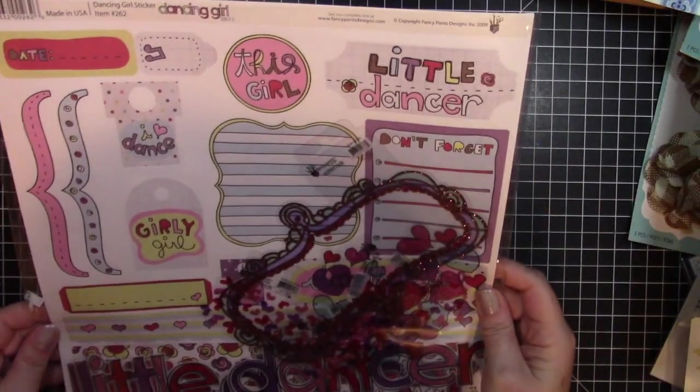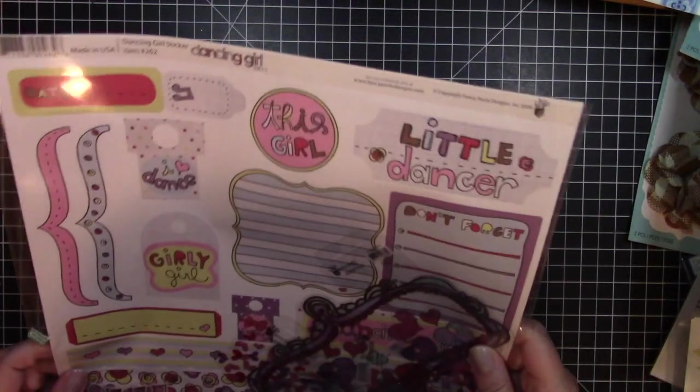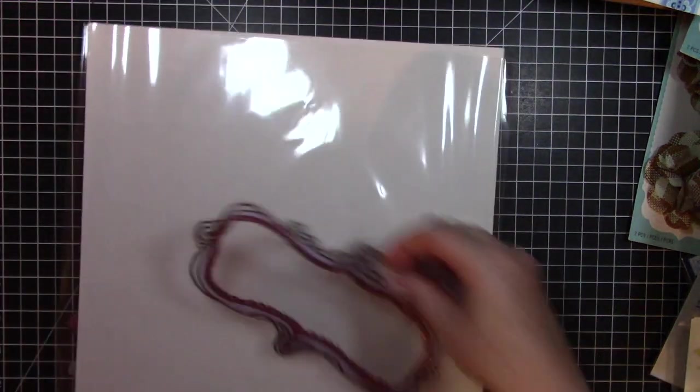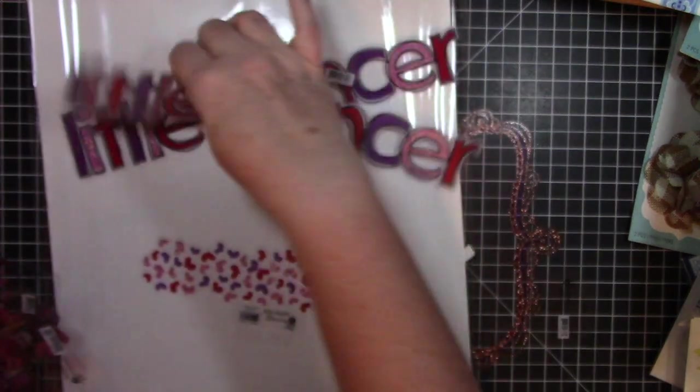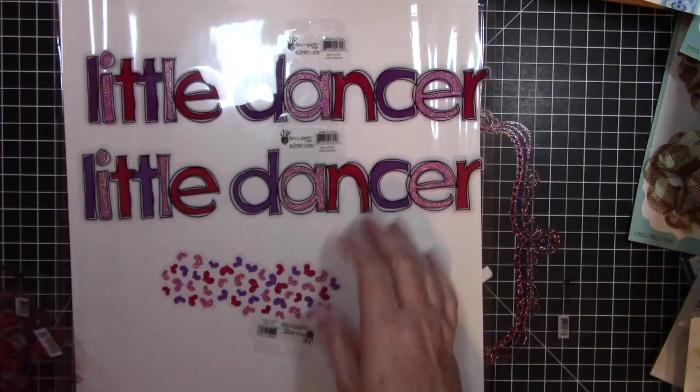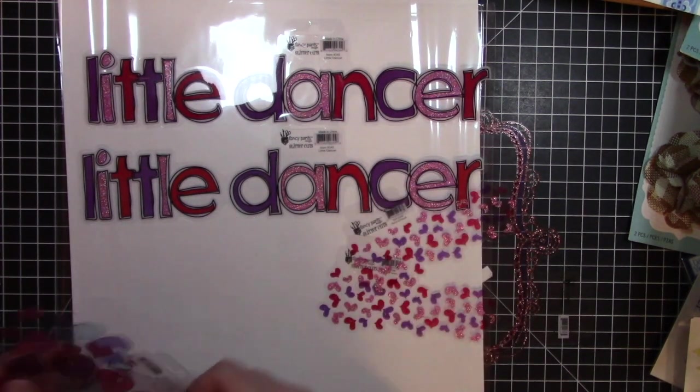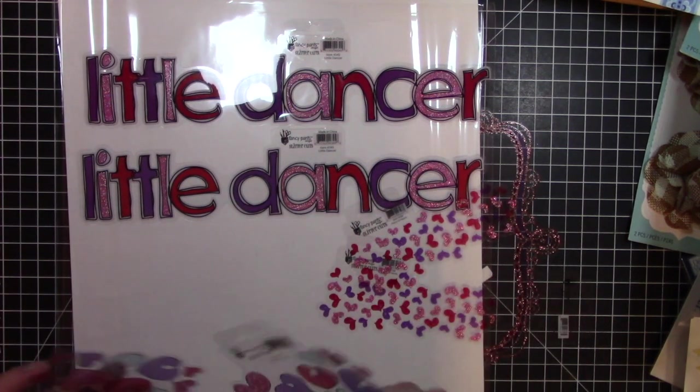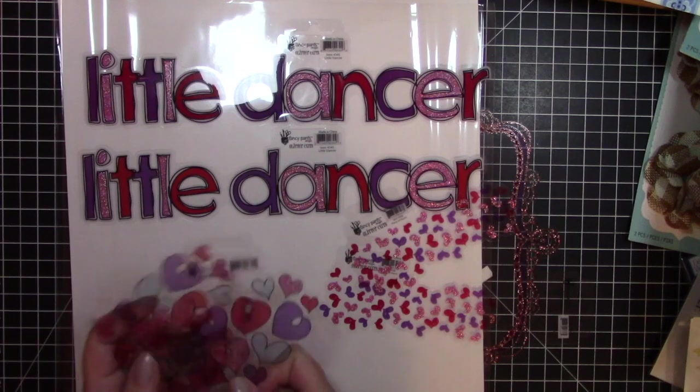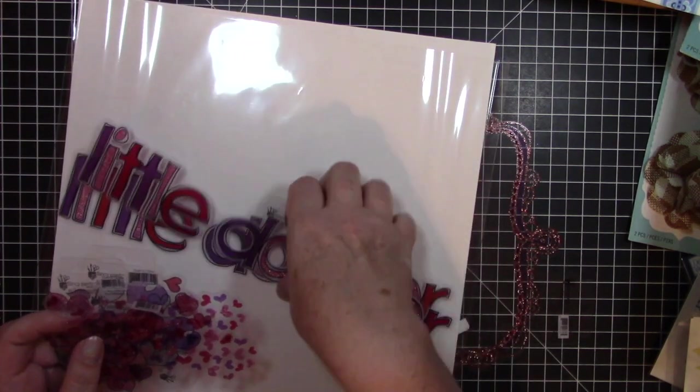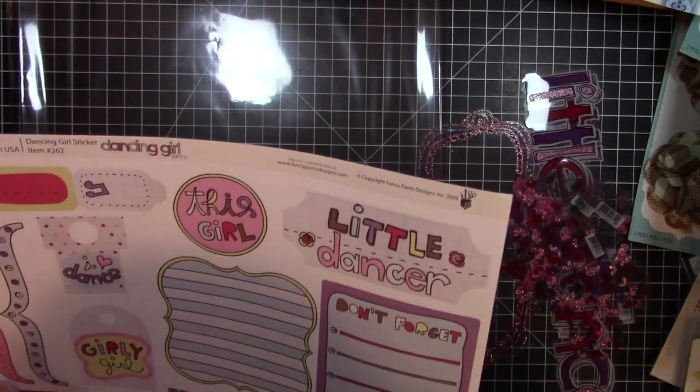Then we have this bag here. It says Little Dancer, and this looks like a few pages of dancer stuff. Little Girl. That's a really pretty frame. So here we have two clear headings that say Little Dancer. Some hearts. Two of those, and then these hearts. And these are from Glitter Cuts. Fancy Pants Glitter Cuts. And they are on clear acetate, and they are very glittery with no glitter fallout, which is great. And these are both the same, and I think they're cutouts or sticker sheets.